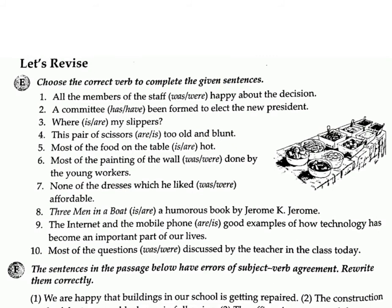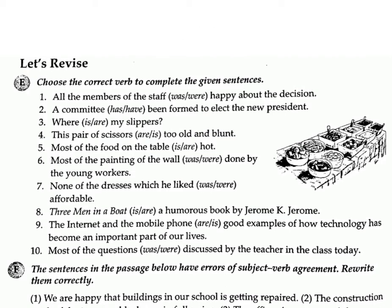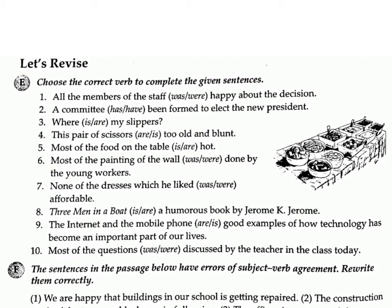Let's revise. Exercise E: Choose the correct verb to complete the given sentences. 1. All the members of the staff were/was happy about the decision. Answer: were. 2. A committee has/have been formed to elect the new president. Answer: has. 3. Where is/are my slippers? Answer: are. 4. This pair of scissors are/is too old and blunt. Answer: is. 5. Most of the food on the table is/are hot. Answer: is.